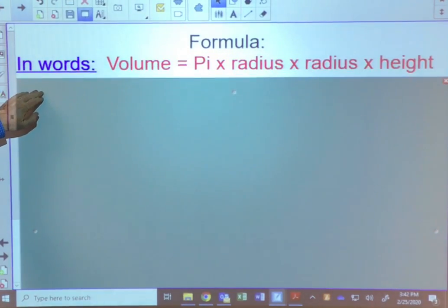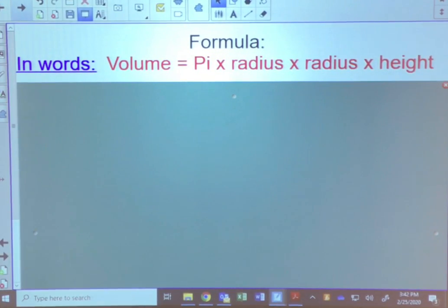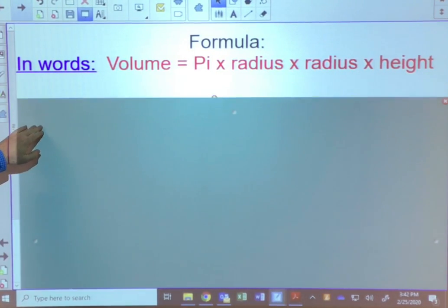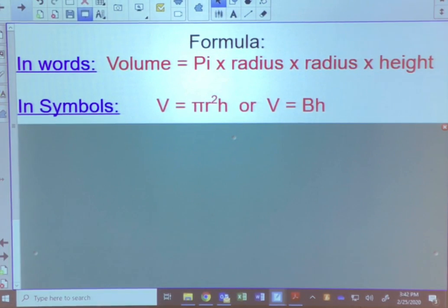The formula we're going to use in words is pi times radius times radius times the height. In symbols, you'll see it written a couple of different ways. One way you'll see it is volume equals pi r squared h, or you'll also see it as volume equals capital B times h.